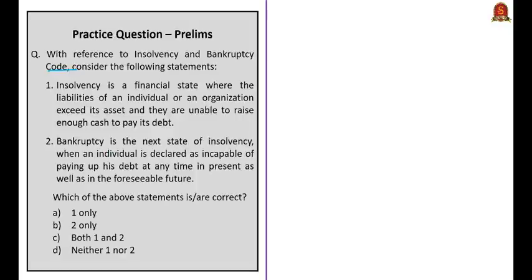Statement one: Insolvency is a financial state where the liabilities of an individual or an organization exceeds its assets and they are unable to raise enough cash to pay its debt. Statement two: Bankruptcy is the next state of insolvency, when an individual is declared as incapable of paying up his debts at any time in present as well as in the foreseeable future. Both statements are correct. The correct answer is option C.